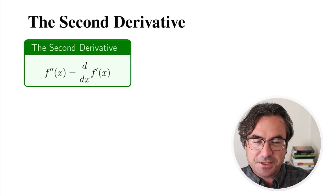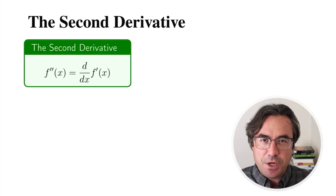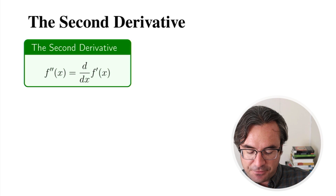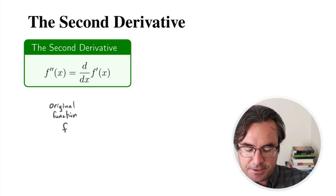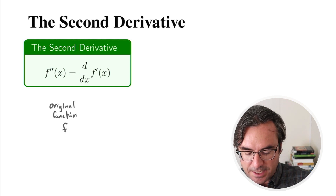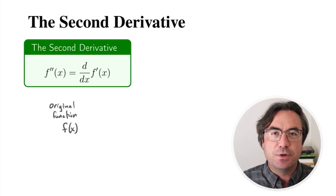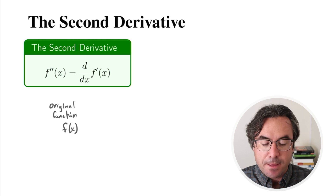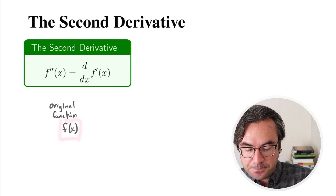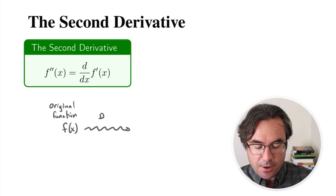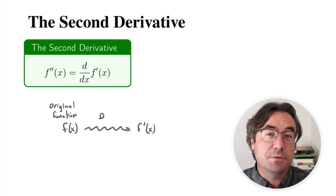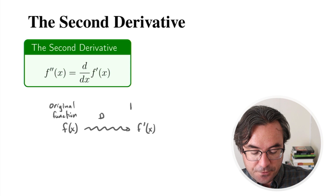You can think of this almost as like a chain. We start with our original function f of x. We have all these different rules to help us, and we know that we can take a function and, with all of those different techniques, we can differentiate and we get something that we call f prime of x. This is the derivative, or more specifically, this is the first derivative.